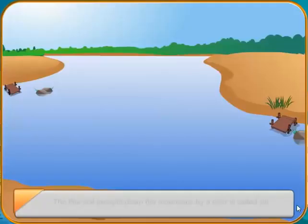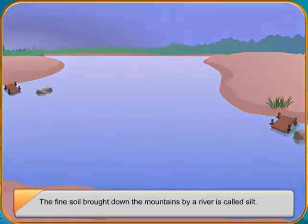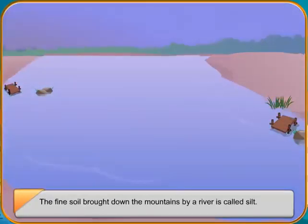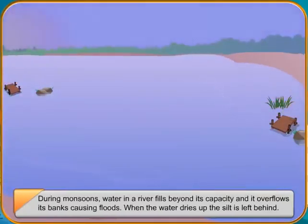The place where a river ends its journey is called the mouth of a river. From here, the river flows into a lake, sea or ocean.